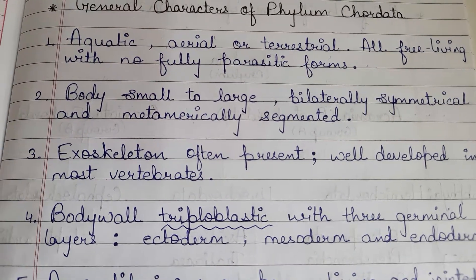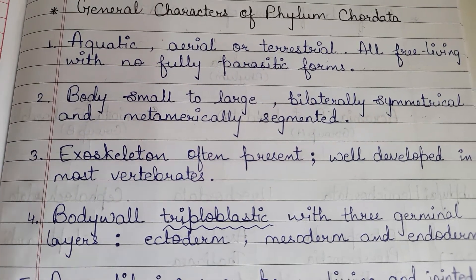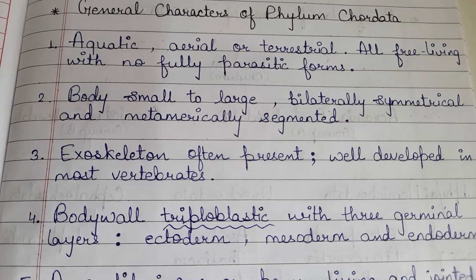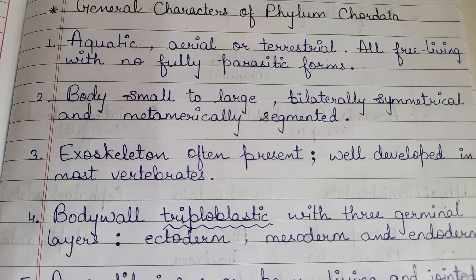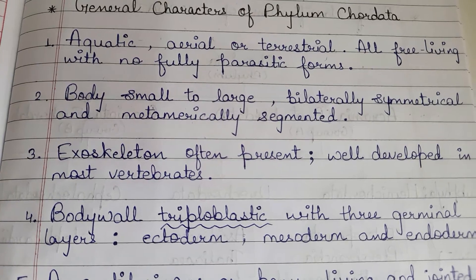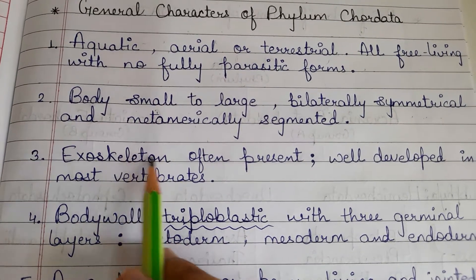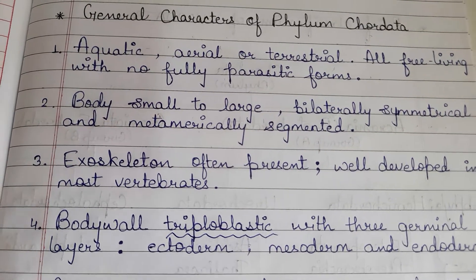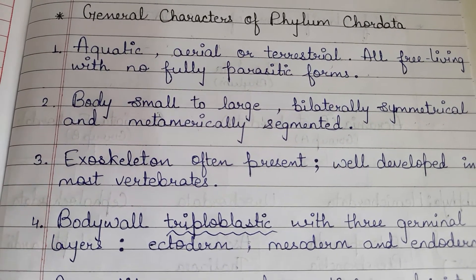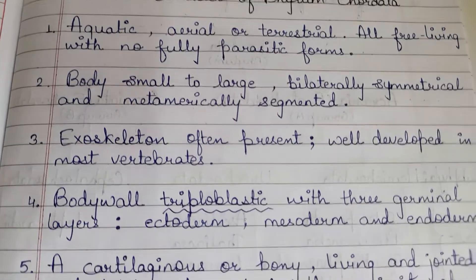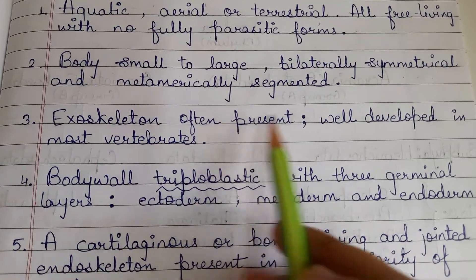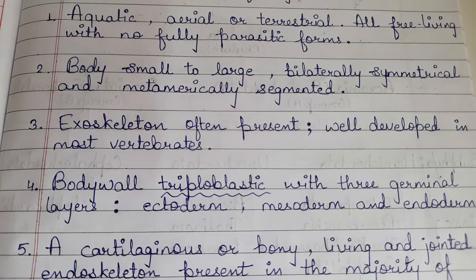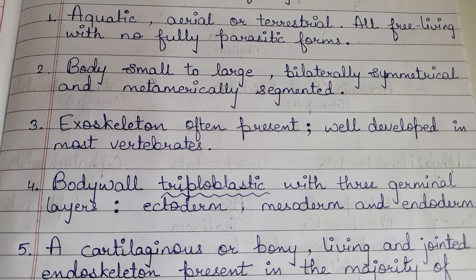Regarding skeleton: you know there are two types of skeletons — endo and exoskeleton. In humans, there is an endoskeleton. Exoskeleton is present on the outside of some animals' bodies and protects them. In Chordata, exoskeleton is often present and well-developed in most vertebrates.